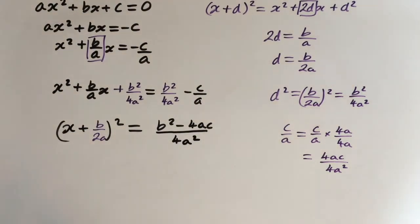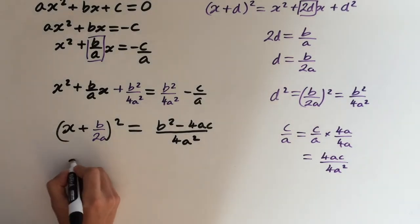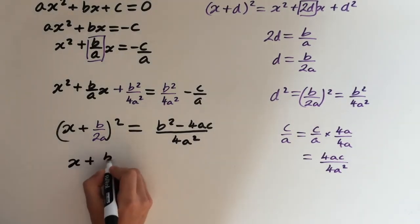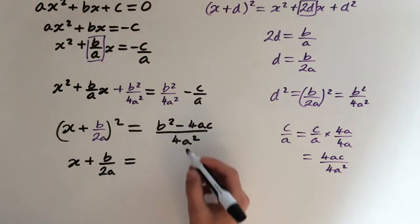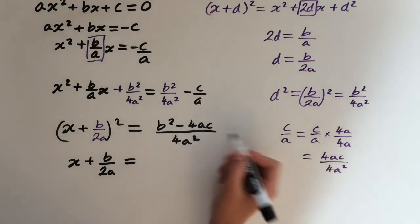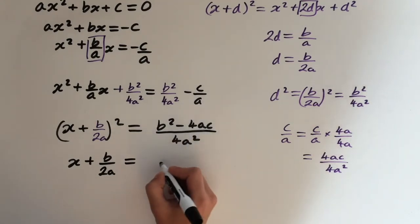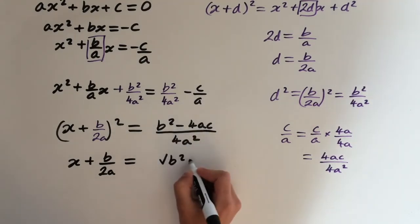So now we can square root both sides. The left hand side just simply goes to x plus b over 2a. But on the right hand side, we need to look at the top and bottom of the fraction. The top we can't do much, so that's just going to be square root of b² minus 4ac.